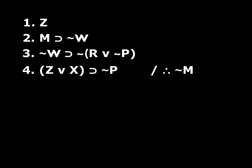Let's do another one. Four premises and the conclusion I want to derive is not-M. Looking at this: if M then not-W — can I do modus ponens? I don't have M. Can I do modus tollens? Do I have W anywhere? No. Here's another conditional — I don't have W so I can't do modus ponens. Do I have the negation of this consequent? That would be R or not-P — I don't have that, so I can't do modus tollens. What about line three? If I had Z or X I could do modus ponens, but I don't have that. I also don't have the negation of this. So it looks like I'm stuck.